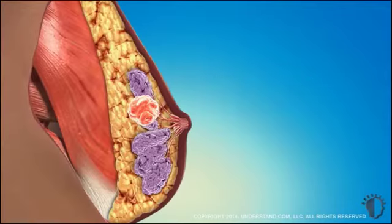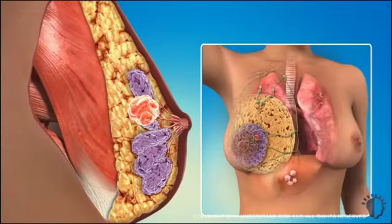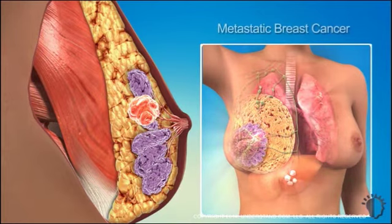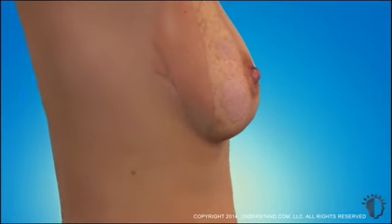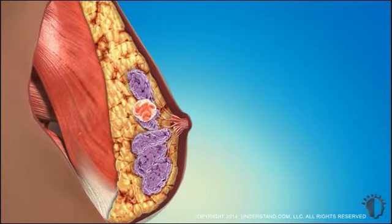If the cancer has metastasized, a term that means it has spread beyond the breast, it is referred to as metastatic breast cancer. In addition to cancer cell type, breast cancers are often characterized by stage. This staging system helps identify patients who have cancers that behave in a similar fashion.